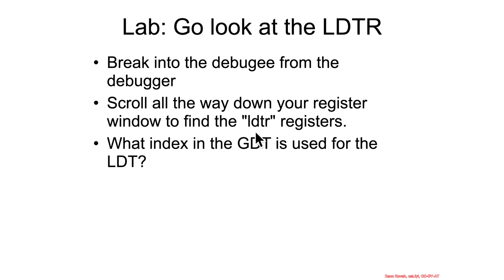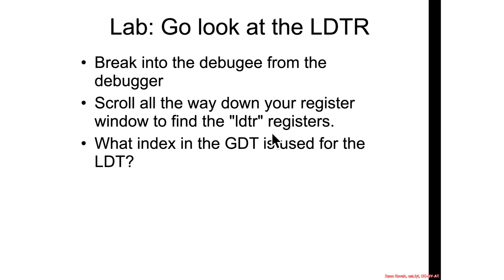Let's look at the LDT register and see what it uses as the GDT index. The LDT register is a 16-bit segment selector. We covered segment selectors in the previous section — we know they have an RPL, a table indicator, and an index. So let's see what that index is.